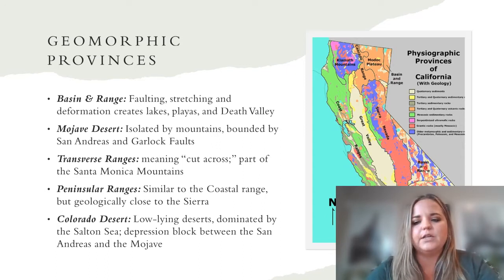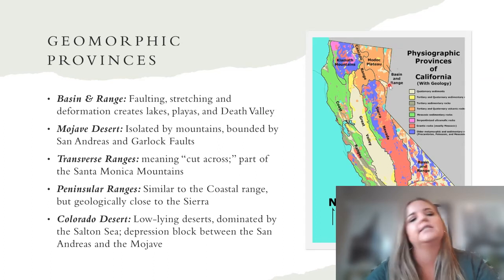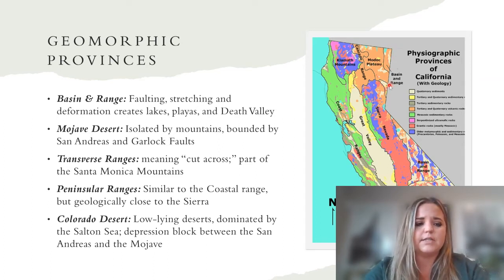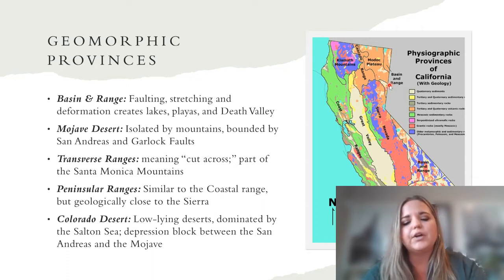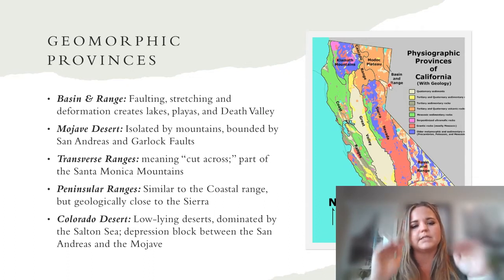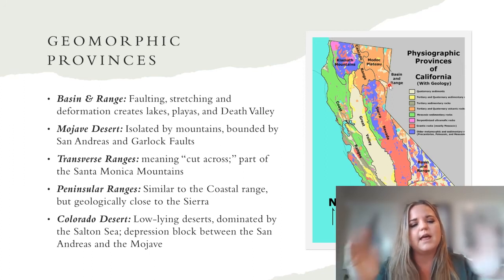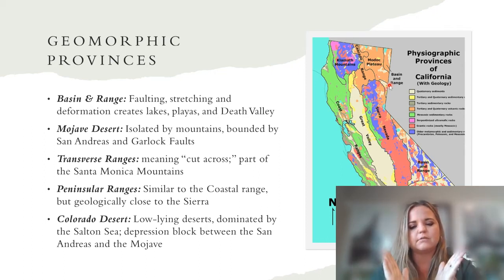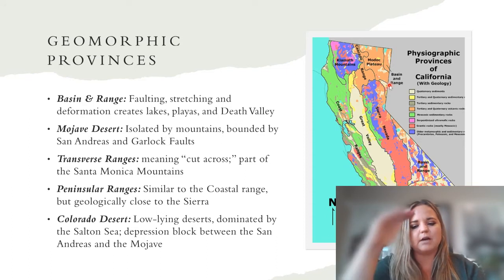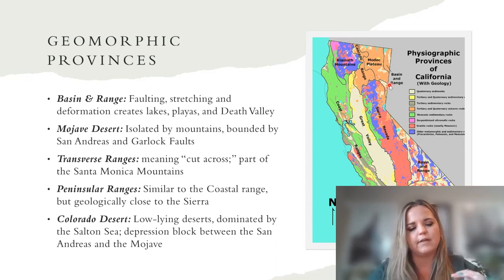The Basin and Range is in the eastern and northeastern part of the state. This area has a lot of faulting and stretching that has created lakes, playas, and Death Valley. This creates something called a Horst and Graben scenario — a series of normal faults that alternate in orientation, creating blocks that uplift and blocks that drop down. We get an up-and-down scenario where we have a mountain range and then a valley.